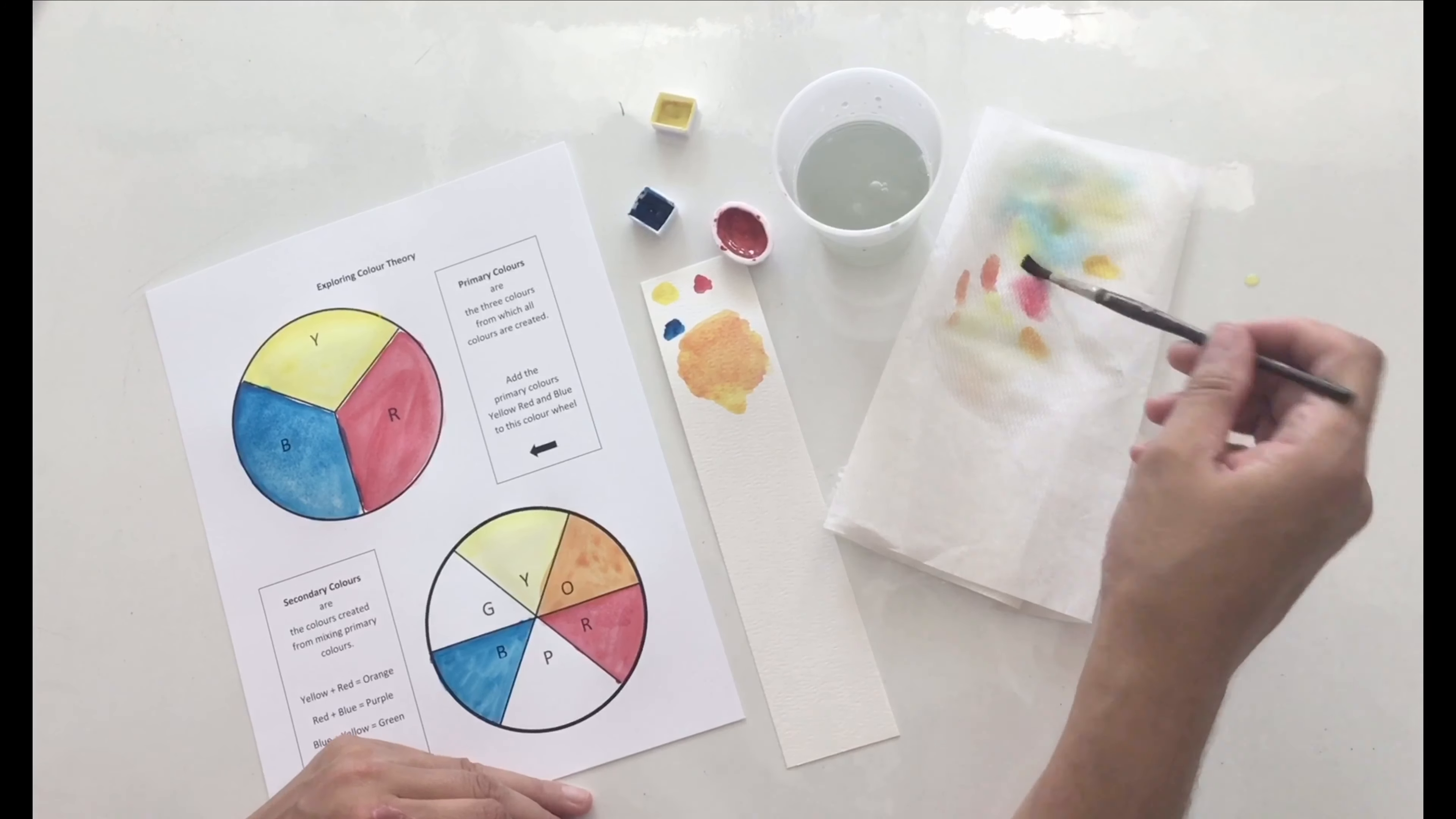So we're going to start again with some more yellow, and this time we're going to mix it with a little bit of blue. Oh wow, so that blue is really dark. So I'm going to blot some of that blue paint off my brush, maybe rinse it a little bit, and then go back to blending. Now the more blue you add, the more of a turquoise color you're going to get. And then if you add a little more yellow, you're going to get a more leafy kind of green color.